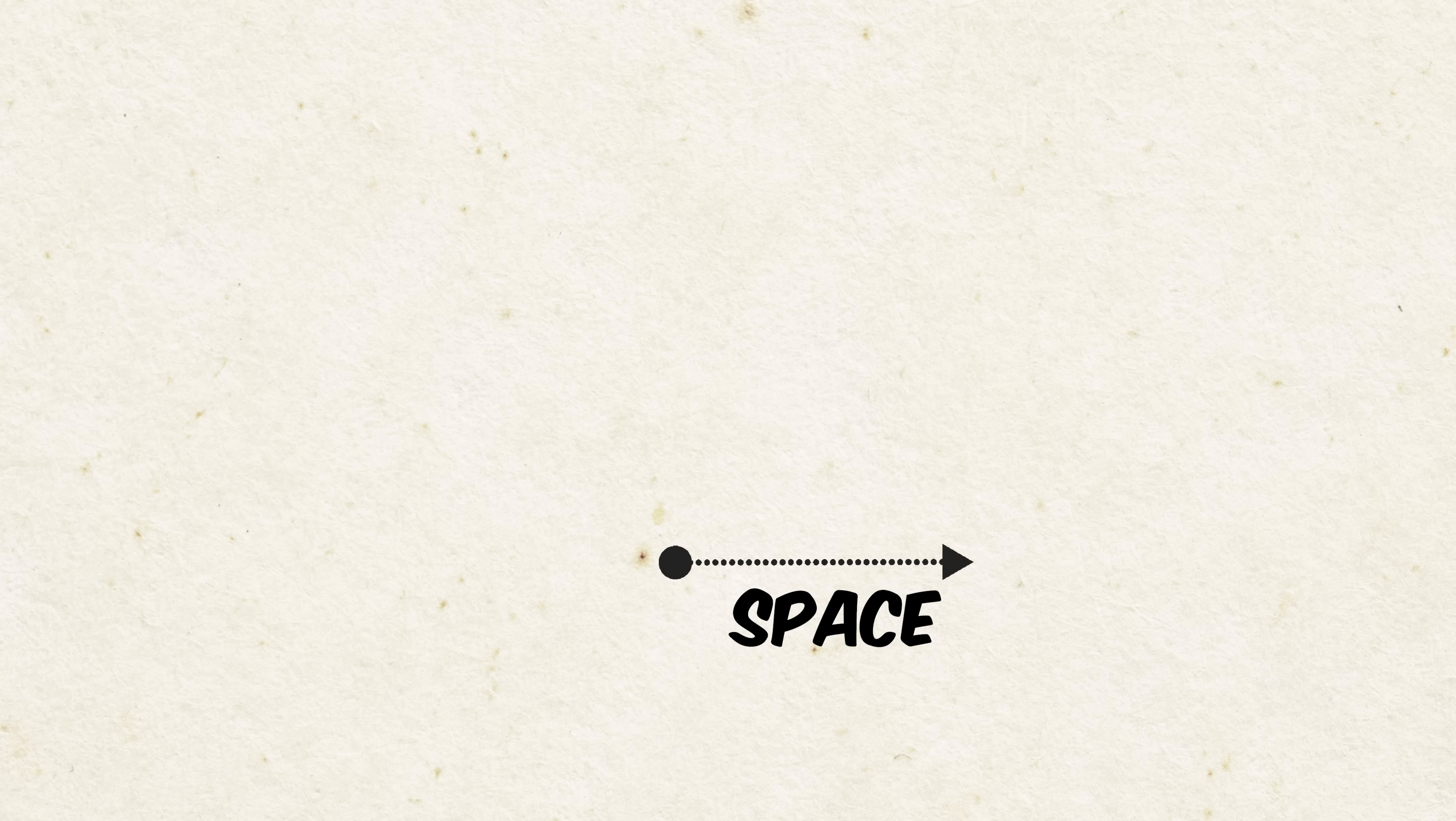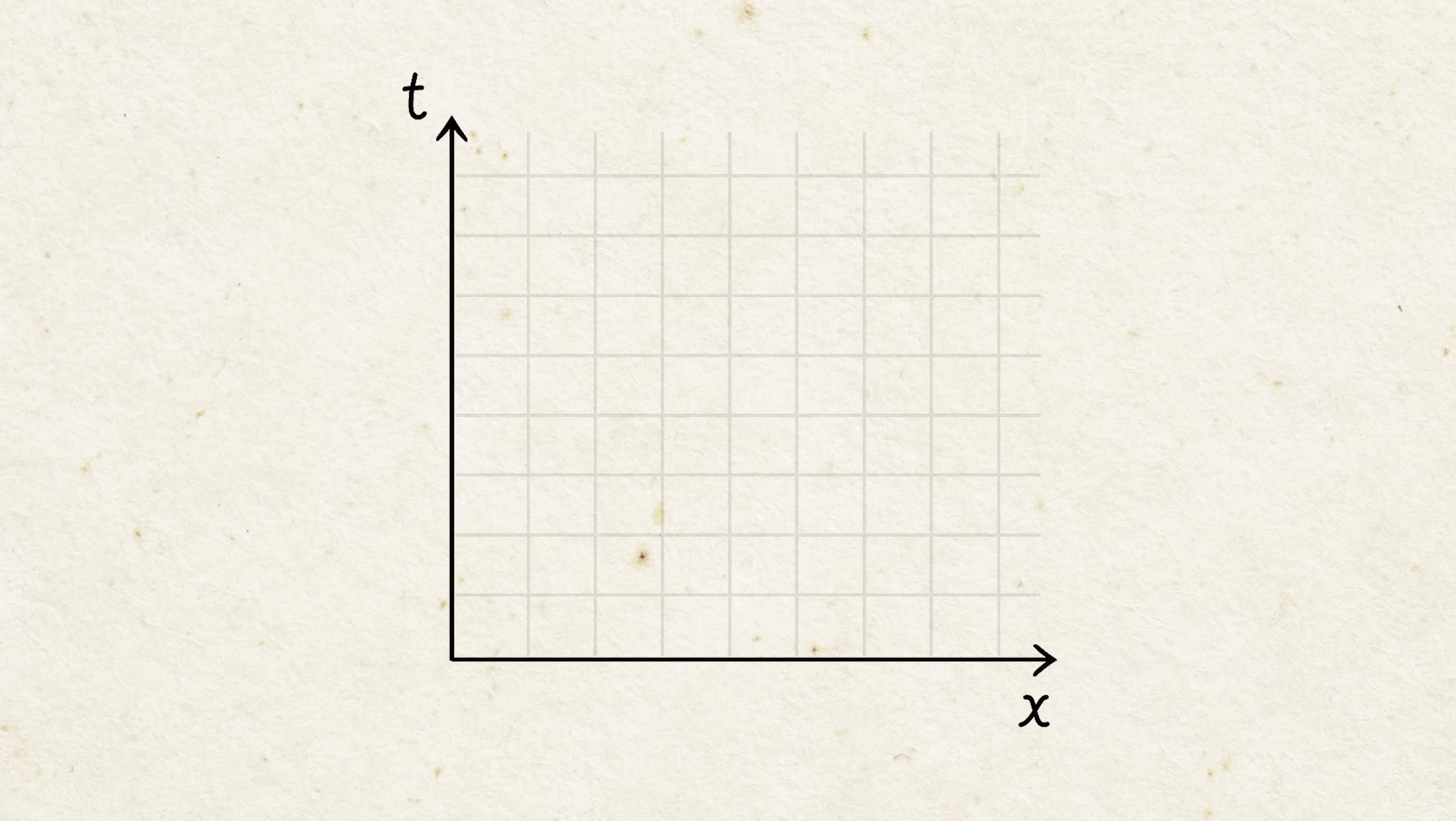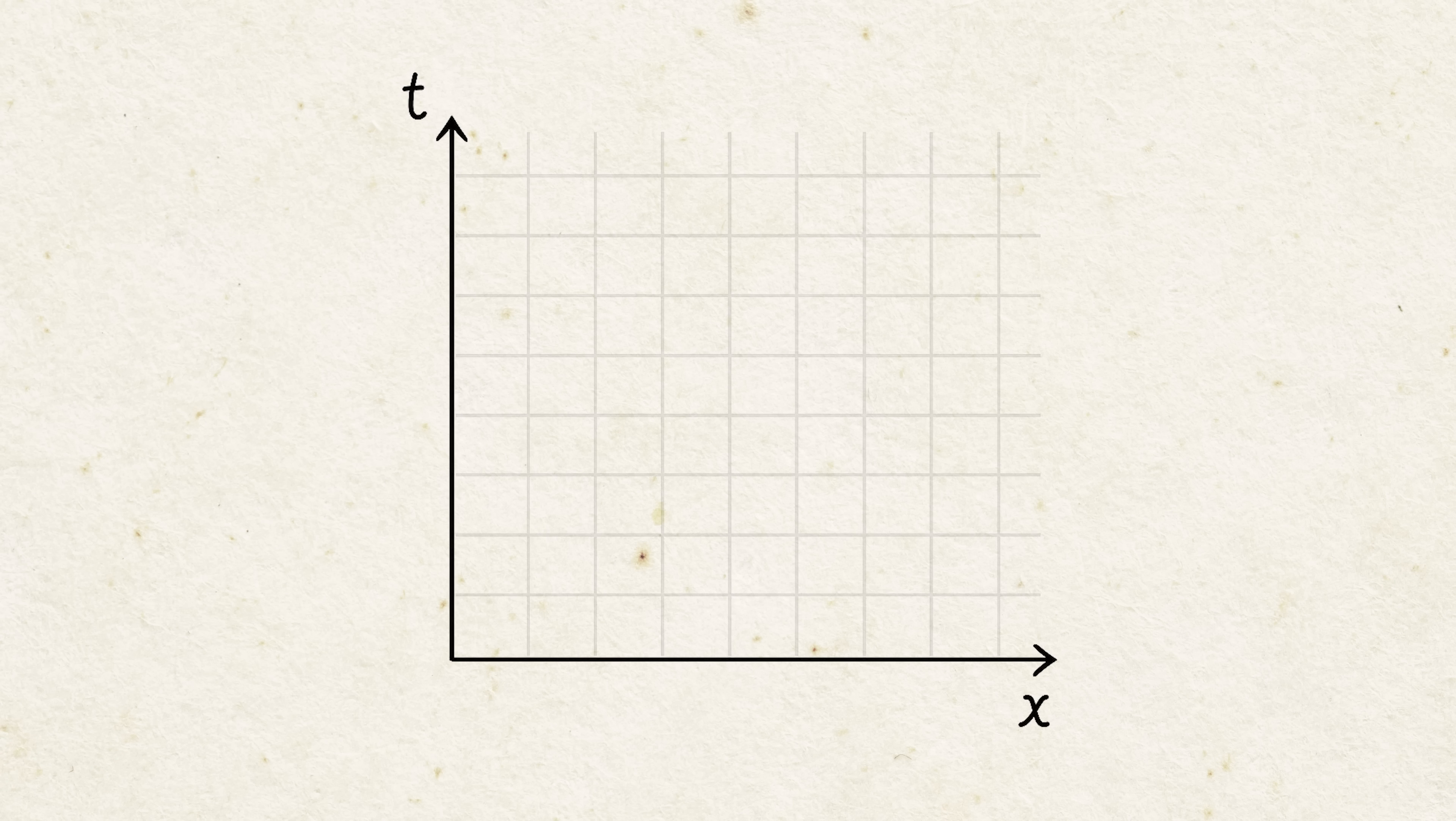Let's pretend that there are only two dimensions, one space dimension and one time dimension. So instead of X, Y, and Z axes, we just have a time axis and a space axis. When the axes are straight lines like this, it represents flat spacetime.